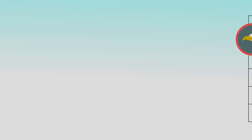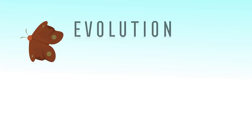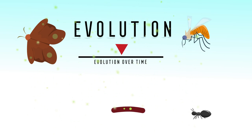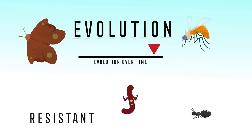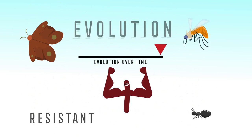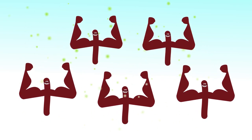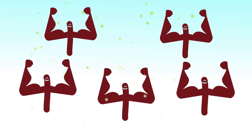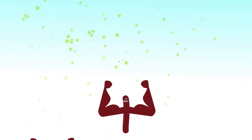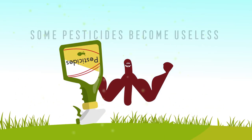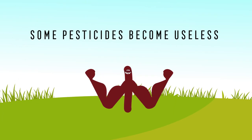Through the process of evolution and natural selection, some pests become resistant to pesticides — they survive and reproduce. The overuse of pesticides has led to an increasing number of resistant organisms, meaning that some pesticides are now useless.